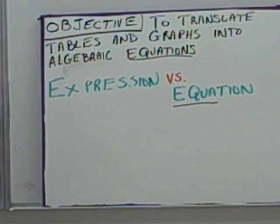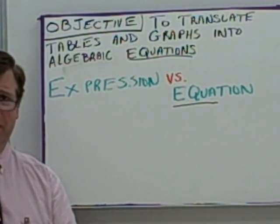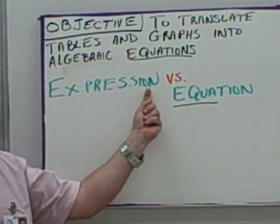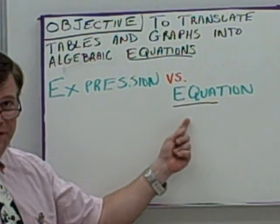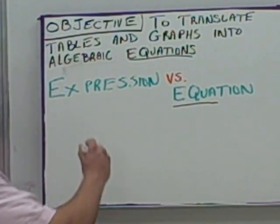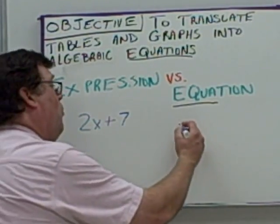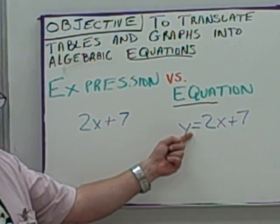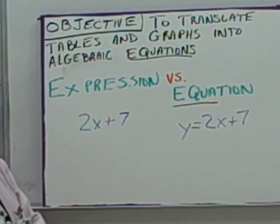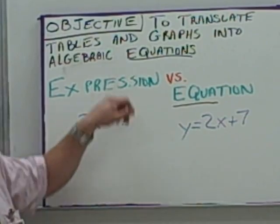Hello. The objective of this video is to translate tables and graphs into algebraic equations. This is different from what we have been doing so far, in that we've been working with expressions, not equations. The difference between an expression and an equation is that an equation has an equal sign in it. For example, 2x plus 7 would be an expression, while y equals 2x plus 7 would be an equation — big difference between the two.